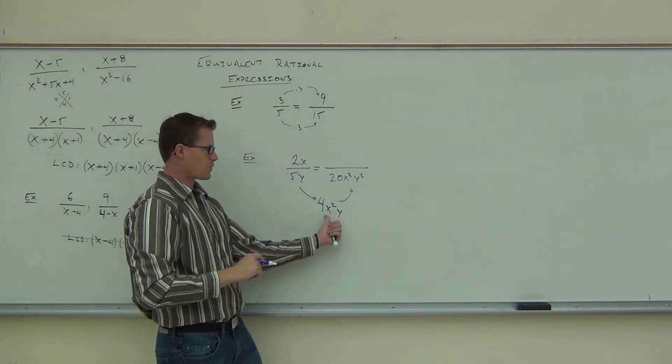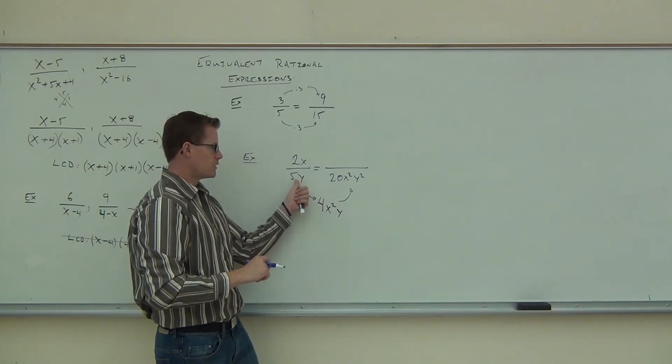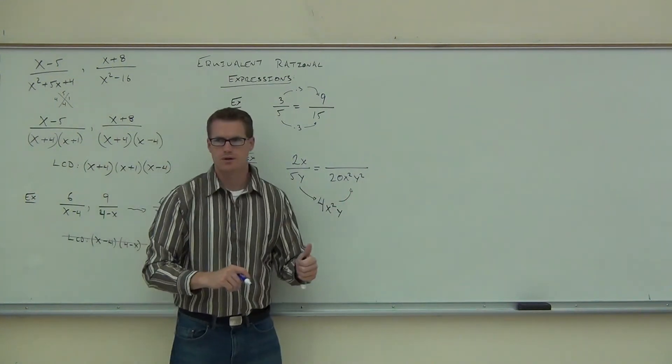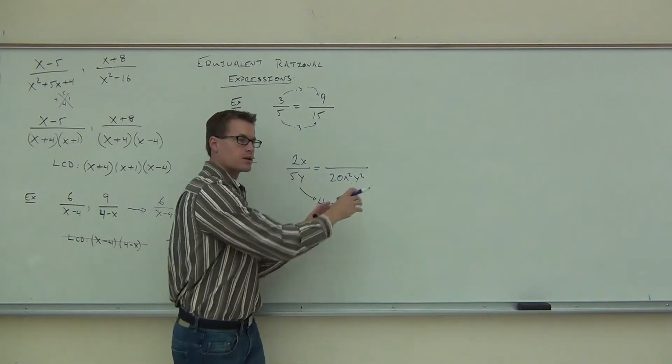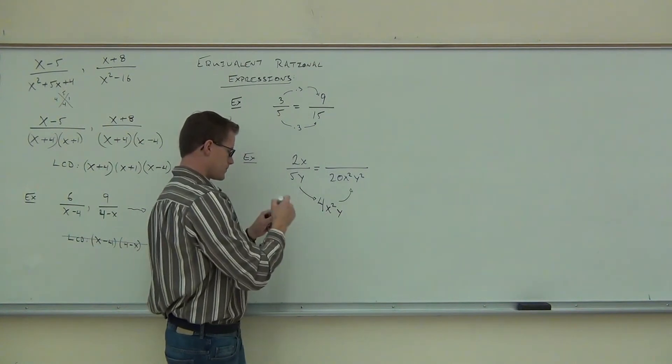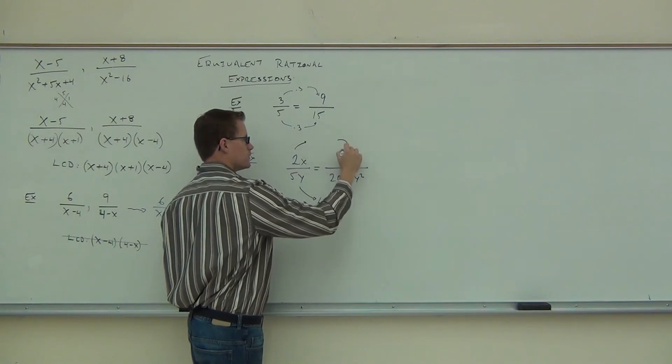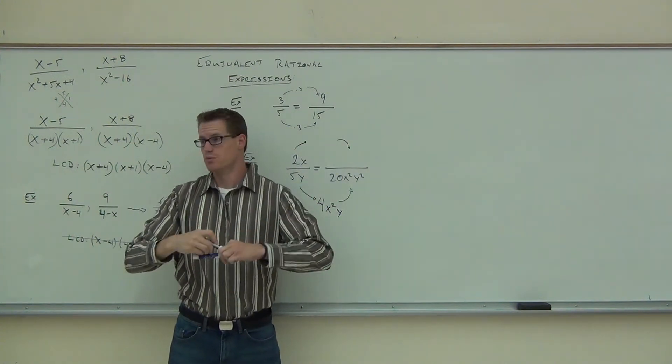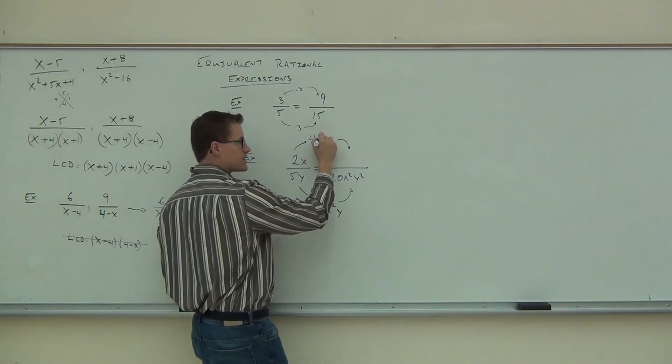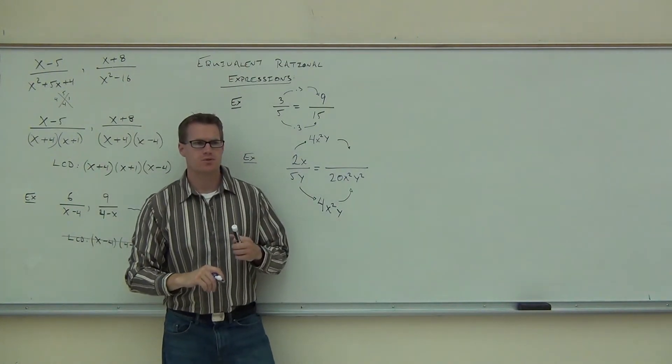So 5y, we've got 4x squared y. We'll double check that. 5 times 4 gives you 20. 5y times the x squared - that's where x squared's coming from. Y times y gives you y squared. You all right with that? So you ask that question. How do you get from here to here? And then what you're going to do, take this piece of information you just found, and just multiply the numerator by that. And that'll give you your new equivalent numerator. So we're going to multiply by 4x squared y, exactly what you just had to solve. Let's do the math. If you multiply 2x times 4x squared y, what are we going to get? 8x cubed y.